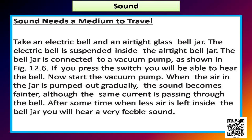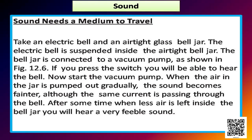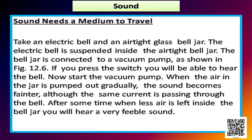Take an electric bell and an air-tight glass bell jar. The electric bell is suspended inside the air-tight bell jar. The bell jar is connected to a vacuum pump as shown in the figure. A vacuum pump is an instrument which can vacuumize any volume. If you press the switch, you will be able to hear the bell. Now start the vacuum pump — as air in the jar is pumped out gradually, the bell is still ringing but the sound becomes fainter.